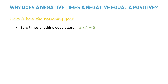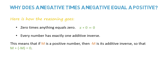Zero times anything equals zero. Every number has exactly one additive inverse. This means that if m is a positive number, then minus m is its additive inverse, so that m plus minus m equals zero. Likewise, the additive inverse of minus m is m.